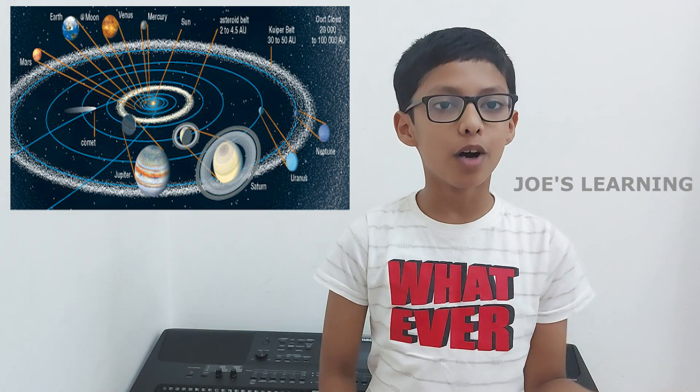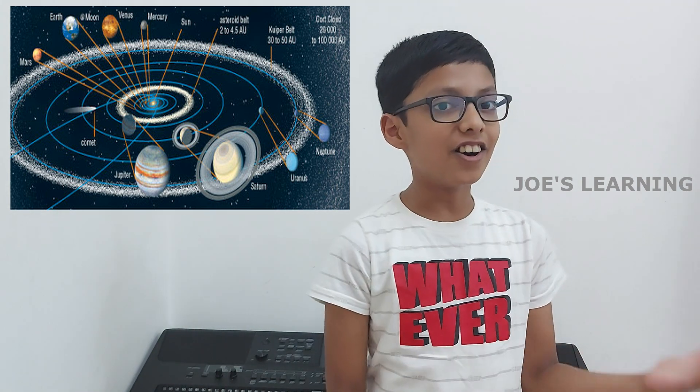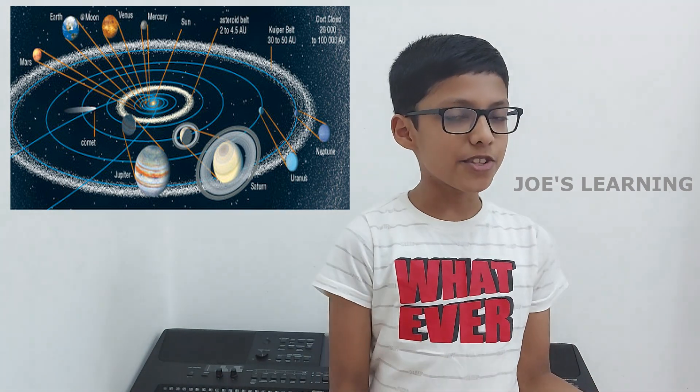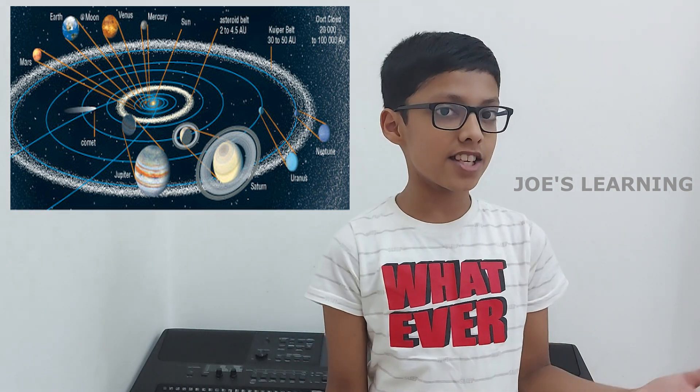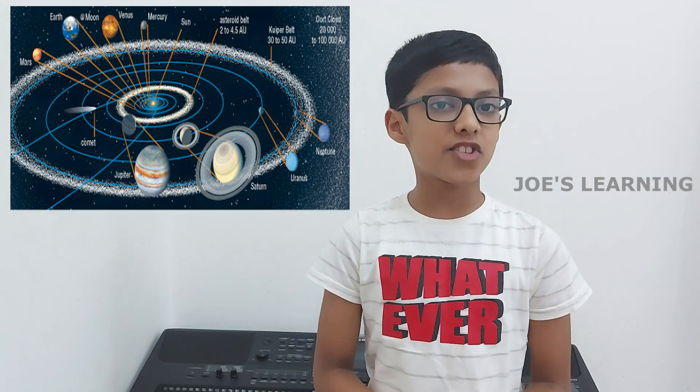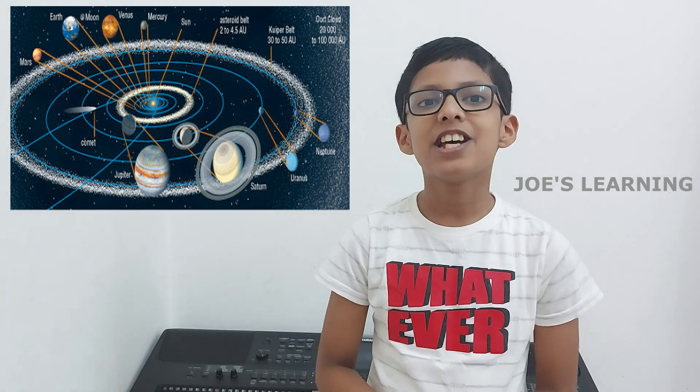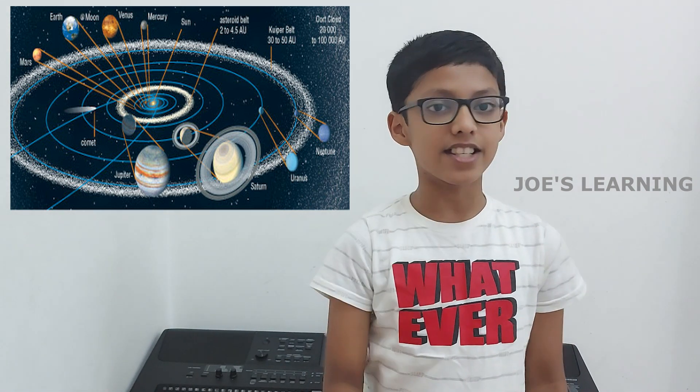Seven of these planets - Mercury, Venus, Earth, Mars, Jupiter, Saturn, and Uranus - are bright enough to be seen with the naked eye.